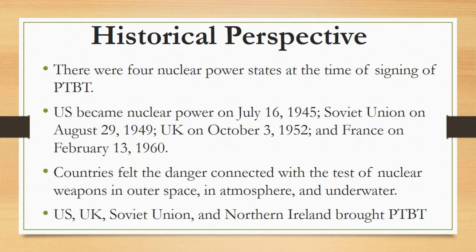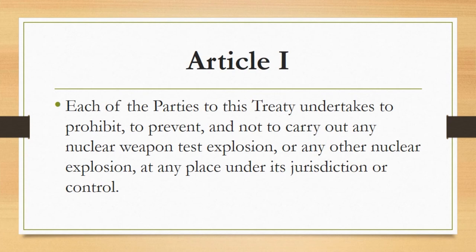The race of acquiring nuclear weapons had started at that time. Countries were continuously testing nuclear weapons anywhere without any hurdle. Countries felt the danger connected with testing nuclear weapons in outer space, in the atmosphere, and underwater. Therefore, the US, UK, Soviet Union, and Northern Ireland brought a treaty to prevent and abstain from nuclear explosions underwater, in the atmosphere, and in outer space. This treaty was inevitable at that time to protect nature.